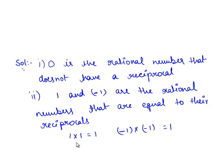Therefore, 1 and -1 have their multiplicative inverse as 1 and -1 itself.